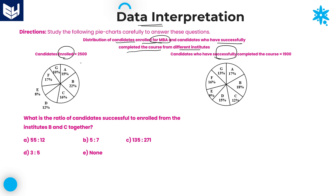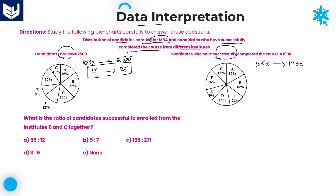Now, if you observe carefully in the first pie chart, the entire pie chart is 100%, and that 100% is equal to the total number of enrolled candidates, which is 2,500. Therefore, one percentage is equal to 25. In the second pie chart, 100% is equal to 1,900, so one percentage is equal to 19. In the first pie chart, one percentage is 25; in the second pie chart, one percentage is 19.